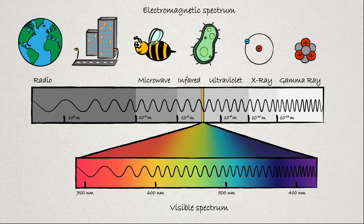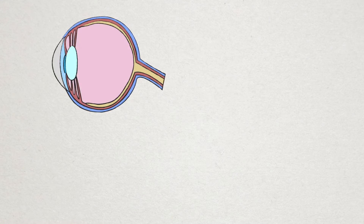The visible spectrum goes from a wavelength of 700 nanometers, which is red, all the way down to 350 nanometers, which is violet. So our eyes are sensitive to both the intensity and wavelength of the light that enters them, which translates to brightness and color in our brain.